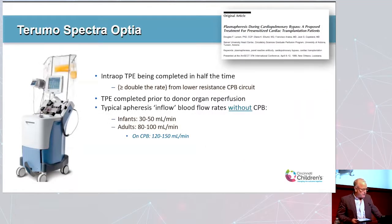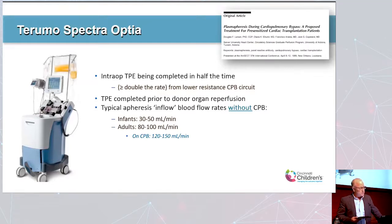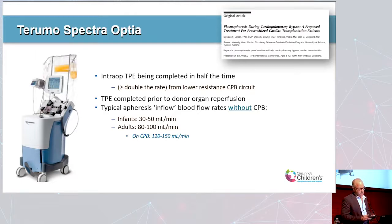Intraoperative TPE can be completed in half the time because there's lower resistance when the apheresis machine withdraws volume from the venous line on the heart-lung machine. The objective is to complete TPE prior to donor organ reperfusion. Typical apheresis inflow blood flow rates without bypass are about 30–50 mL/min for infants and 80–100 mL/min for adults. On bypass, we can achieve flow rates in the apheresis device up to 150–200 mL/min.